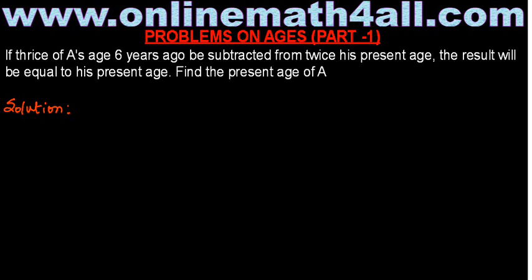Here we are going to see a problem on ages. Let us go to the problem on the board: if thrice of A's age 6 years ago be subtracted from twice his present age, the result will be equal to his present age. Find the present age of A.